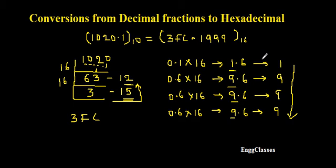To summarize: given the number 1020.1, first find the hexadecimal equivalent of the integer part by successively dividing by 16. Once done, take the fractional part 0.1 and multiply successively by 16. Continue until the fractional part becomes 0, or stop if the process is endless. That's all about converting a decimal fraction to its hexadecimal equivalent.